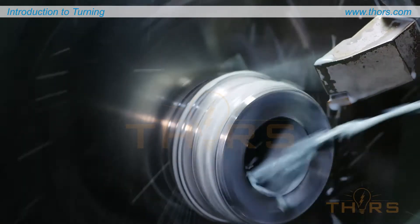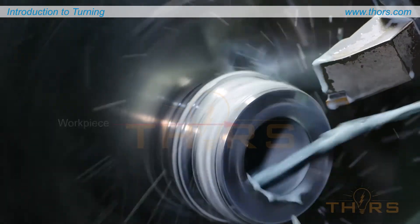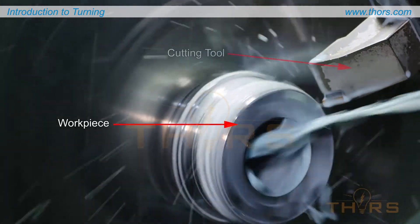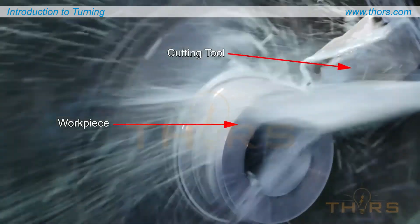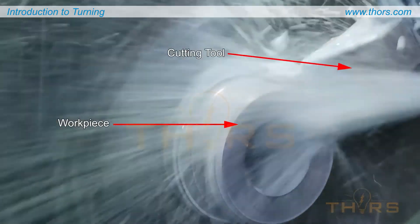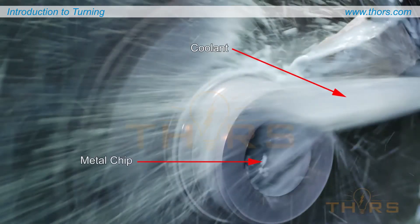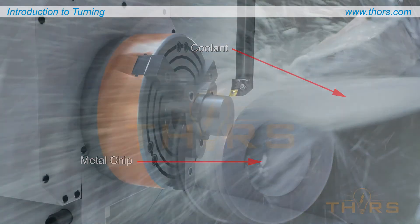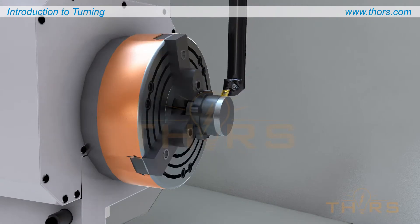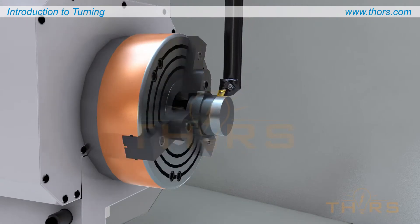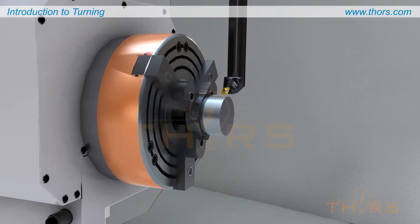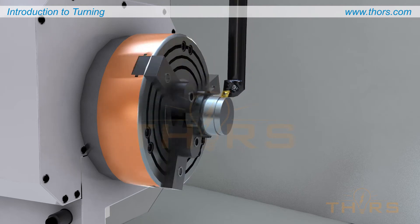Turning is a metal cutting process in which the workpiece rotates while a cutting tool moves along its cylindrical surface. For clarity of learning, the spraying coolant and falling metal chips that are typically seen during the turning process will not be shown in the animations. Turning is typically used to shape the workpiece into the required profile and produce a smooth surface finish on the metal.